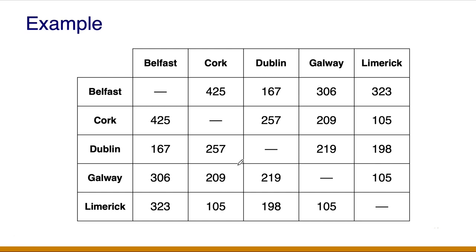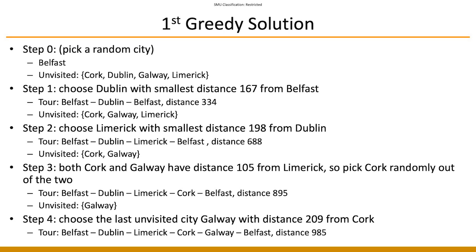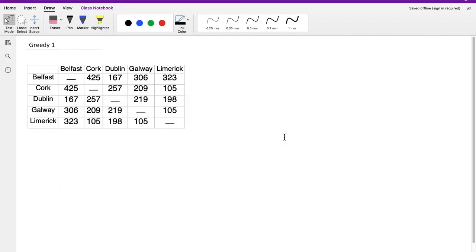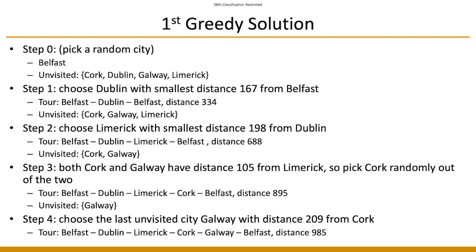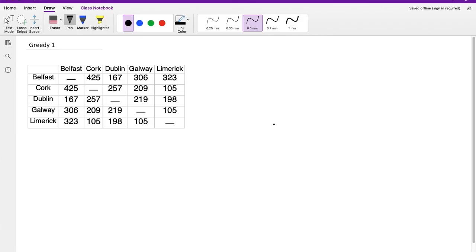We can use the 5-city example from the earlier slides to illustrate how this works. This is the replication of the distance matrix. We have to note the initial condition because the first city is chosen randomly — a different initial city would produce a different sequence. So your T is initially empty, but after you pick the first city, it's Belfast.